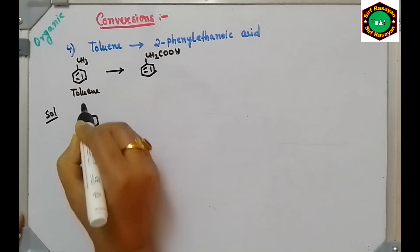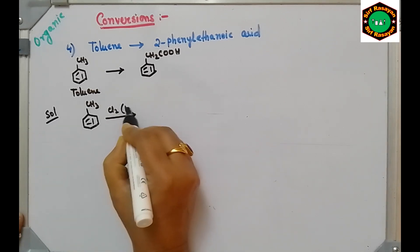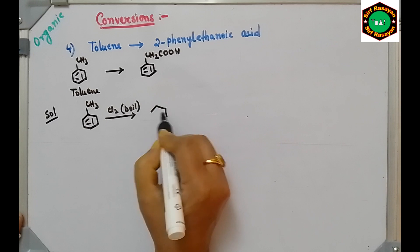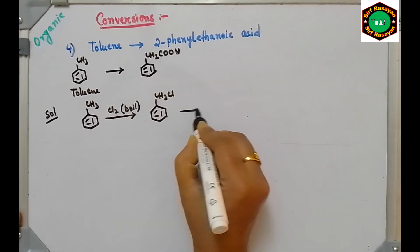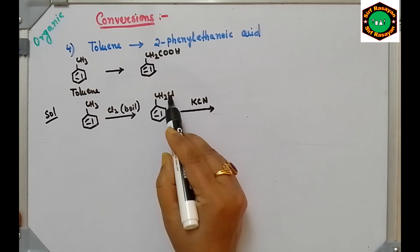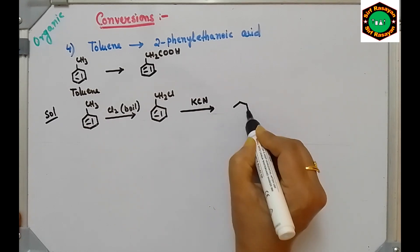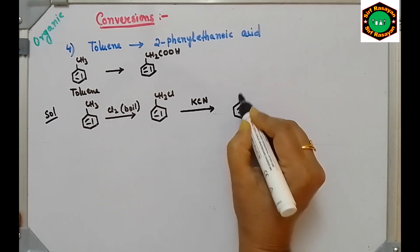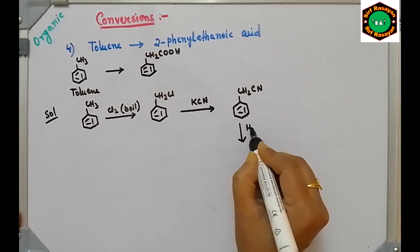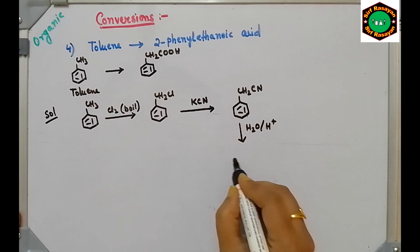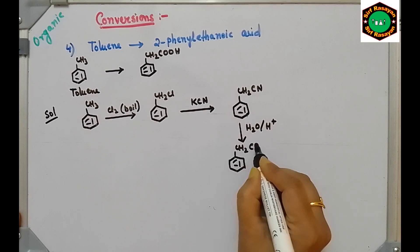Take toluene and add chlorine under boiling conditions — you will get benzyl chloride (C6H5-CH2Cl). For stepping up, treat this with KCN. A nucleophilic substitution reaction will take place: Cl will be substituted by CN (cyano group), so we are incorporating one extra carbon and get C6H5-CH2CN.